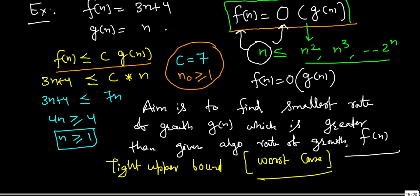In our previous tutorial we discussed Big O notation, but there is a slight correction where I said our aim is to find out the smallest rate of growth which is greater than - I left one thing here - greater than or equal to.